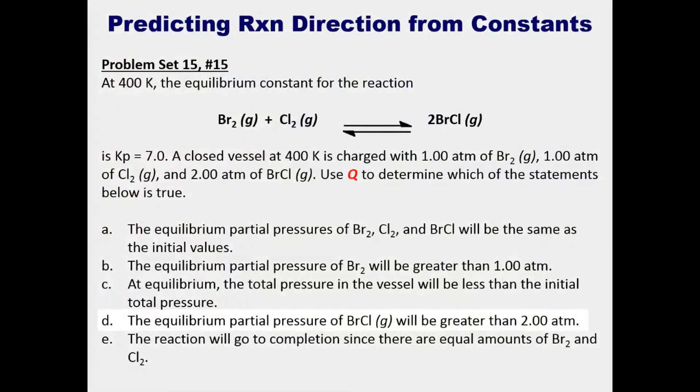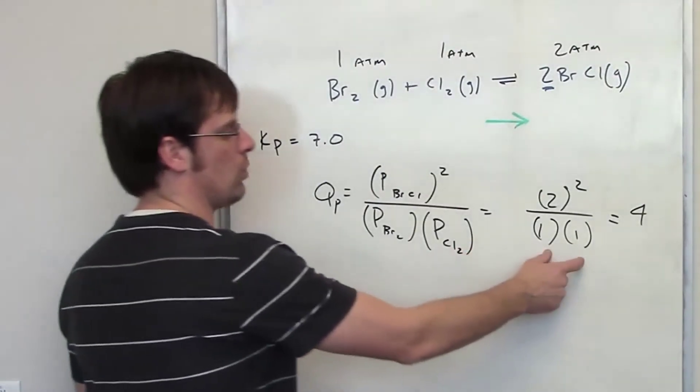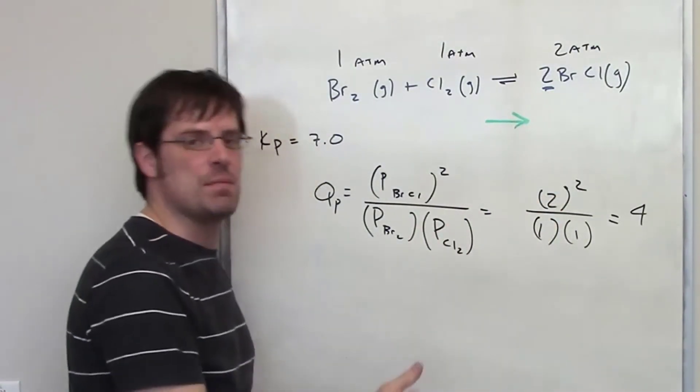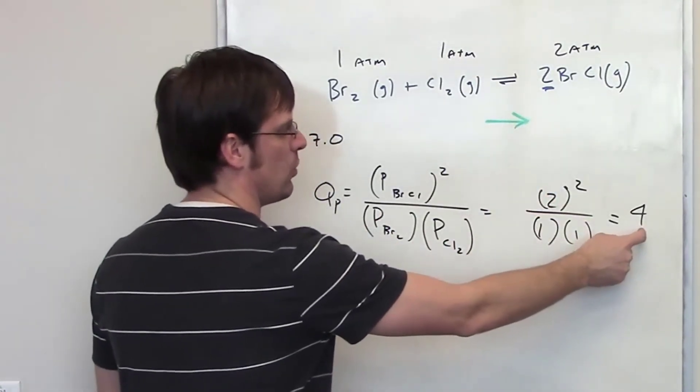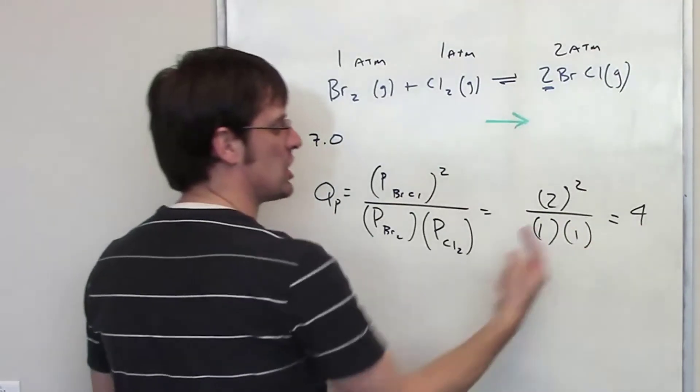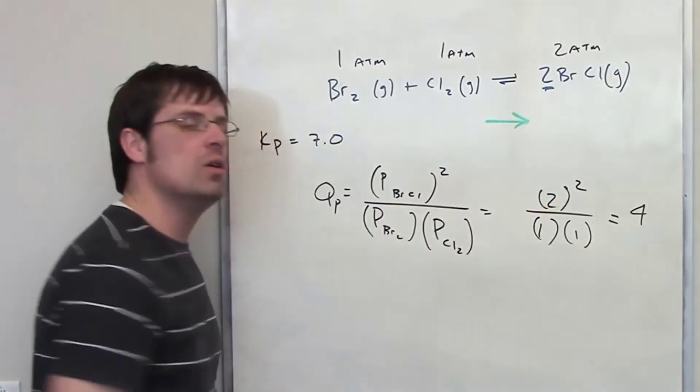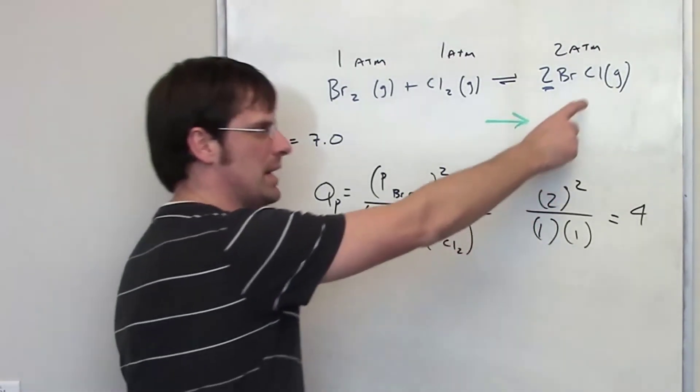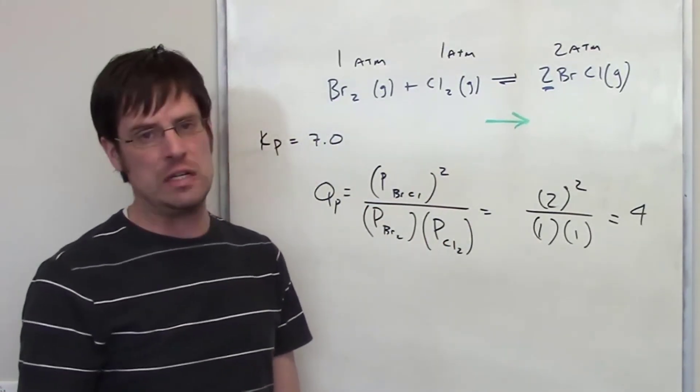Option D then says the equilibrium partial pressure of bromine chloride will be greater than two atmospheres. Going back to our initial reaction quotient here this numerator needs to get bigger. Right now it's at 2 and at 2 the reaction quotient is 4. As I've already stated that needs to go up in order to reach equilibrium K value of 7 so that numerator will be larger than 2. So the equilibrium pressure of bromine chloride will be greater than 2 and therefore the correct answer to this question is D.